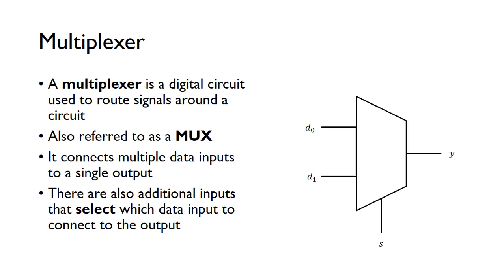A multiplexer is a digital circuit used to route signals around a circuit. It's also referred to as a MUX, and it connects multiple data inputs to a single output.